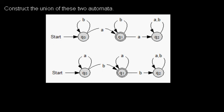And how do we do that? Well, it's very easy. We take those two automata and we add a new start state. Let's call it q0 new or something.